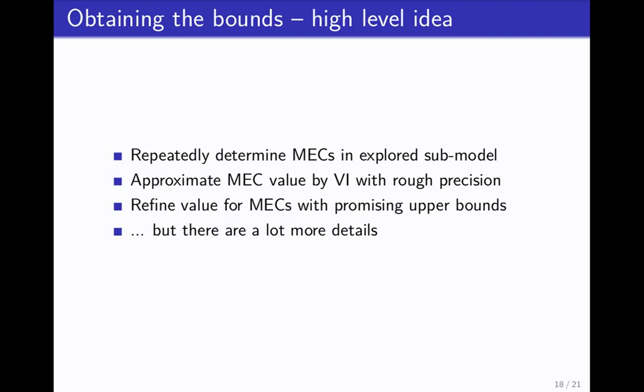Now we have these bounds per state and we need to update them. The very high level idea, this is actually where kind of the central part of the paper lies. This is a bit tricky. The high level idea is that you sample paths. This gives you a sub-model. Basically, you haven't seen all the states. You just memorize the states you have seen so far. In this sub-model, you repeatedly determine MECs, collapse them. In these MECs, you approximate the values using the previous approach. Whenever the algorithm decides, hey, this region looks interesting, then you refine the values when the MEC has promising upper bounds. It's kind of tricky, so if you're interested in this, just look at the paper. I don't have time to go into that, unfortunately.